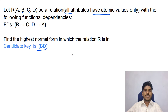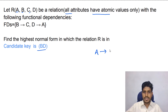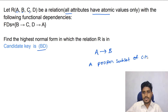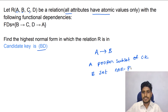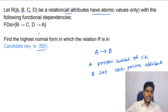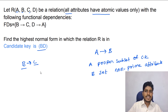Now we have to check whether this relation is in second normal form. Second normal form requires: first, it is in first normal form; and second, it does not contain any partial dependency. A partial dependency is where A determines B, A is a proper subset of the candidate key, and B is a set of non-prime attributes. You can see that B determines C — B is a proper subset of the candidate key and C is a non-prime attribute. So this relation contains a partial dependency.